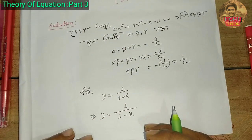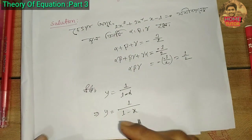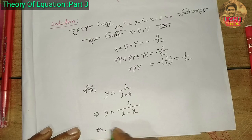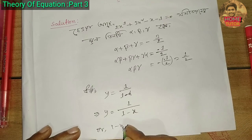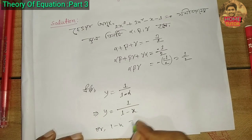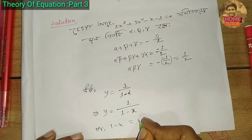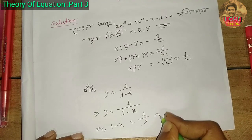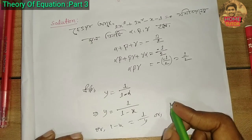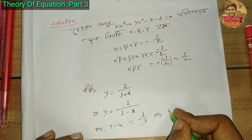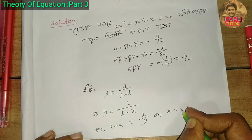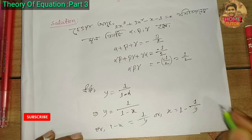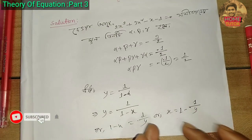So alpha is 0, x equals... 1 minus x is equal to 1 by y. So 1 minus x equals 1 minus 1 by y. Therefore x equals 1 minus 1 by y. So we need to learn x in terms of y.